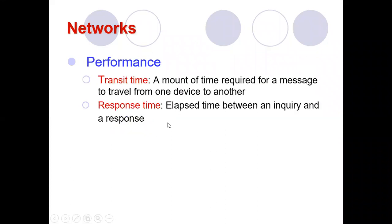To measure network performance, the first things to understand are transit time and response time. Transit time is the amount of time required for a message to travel from one device to another — from source to destination. For example, if sending a packet from system A to system B takes five milliseconds, that is the transit time.